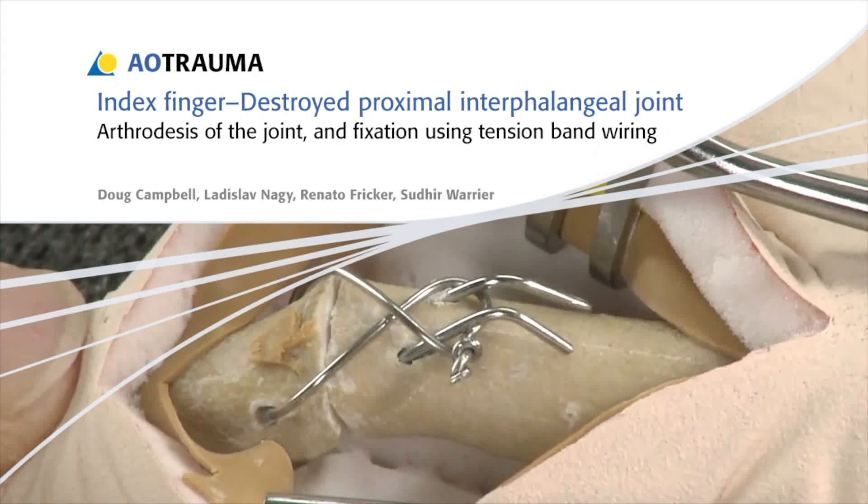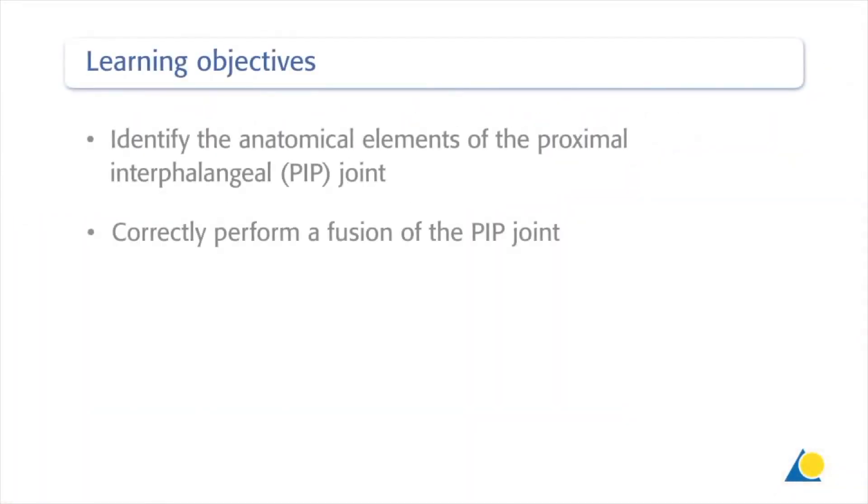In this presentation, arthrodesis and tension band wiring will be used to fix a destroyed proximal interphalangeal or PIP joint. Upon completion of this exercise, you should be able to identify the anatomical elements of the proximal interphalangeal or PIP joint and correctly perform a fusion of the PIP joint.